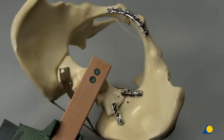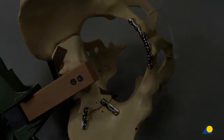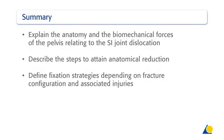Here is the final implant positioning and the correct reduction of this pelvic type C lesion. You should now be able to explain the anatomy and the biomechanical forces of the pelvis relating to SI joint dislocations, to describe the steps to attain anatomical reduction, and define fixation strategies depending on fracture configuration and associated injuries.